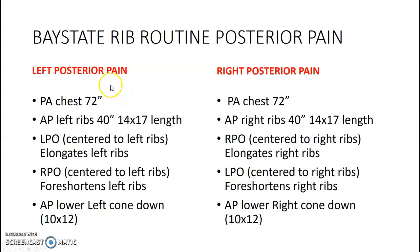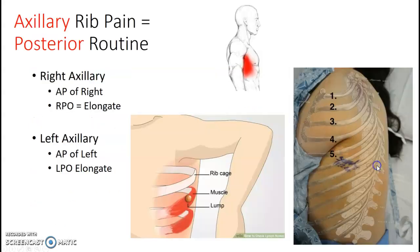Posterior pain is similar — the only difference is you do posterior obliques instead of anterior obliques, and APs instead of PAs because the pain is in the back. You want to put the pain to the IR. So for left posterior, do an AP of the left, LPO, RPO instead. For right posterior, do an AP of the right. For axillary rib pain — if pain is under the armpit area — just do the posterior routine.